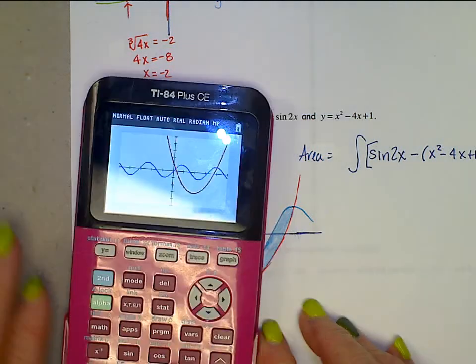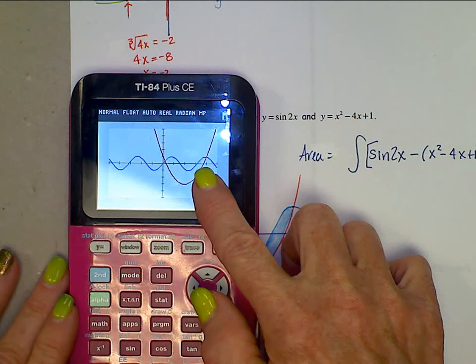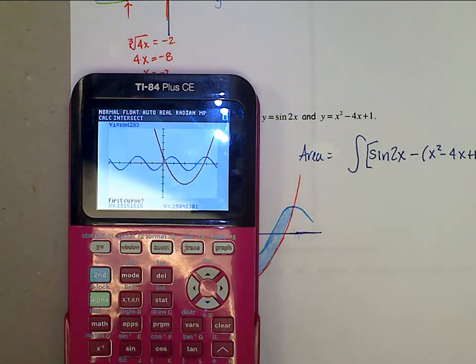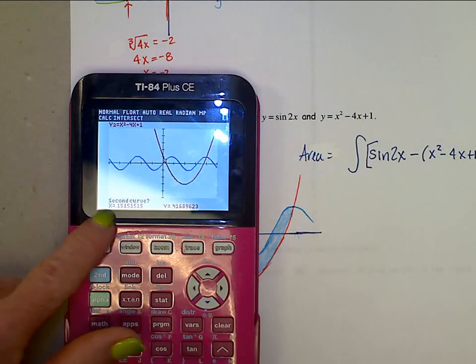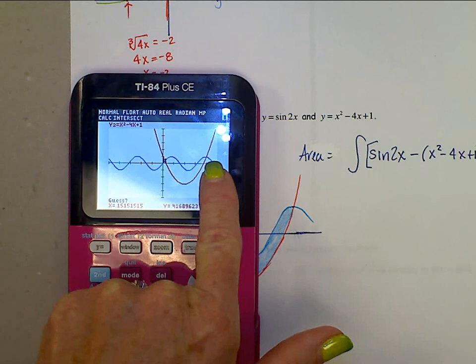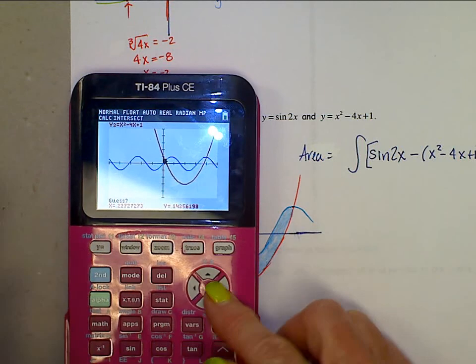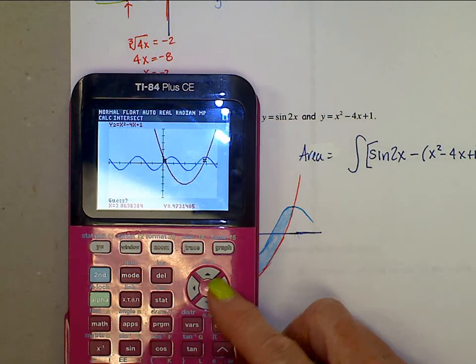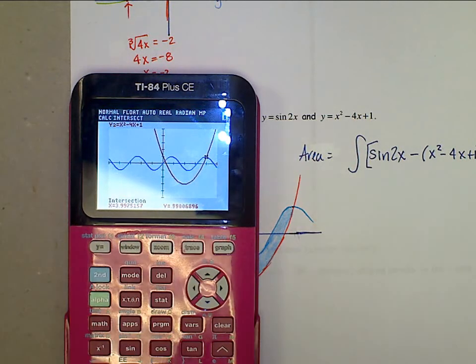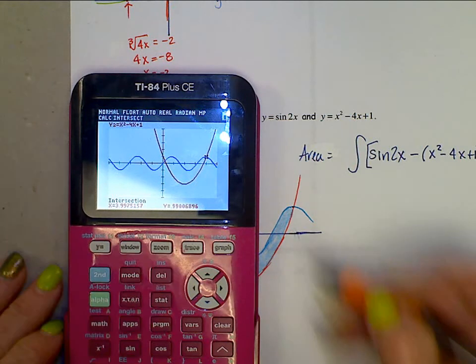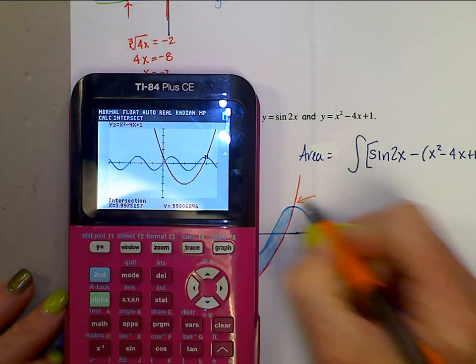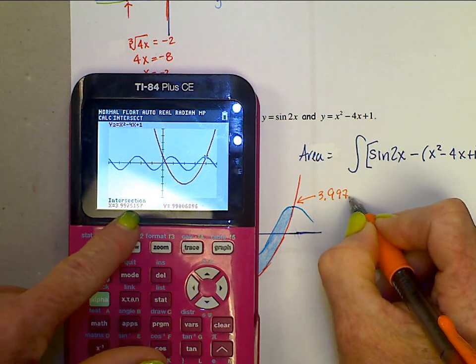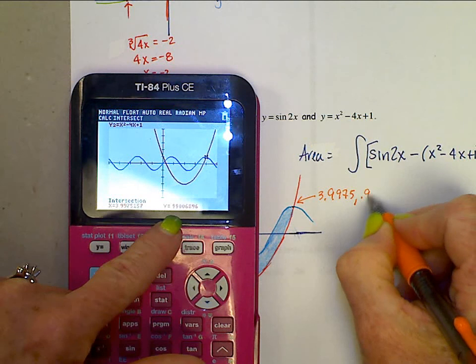Let's go back to your graph. Find the other point of intersection. Second calc, intersect. First curve, yes. Second curve, yes. Guess. You have to arrow over there. Or if you know what number it's close to, I could have just typed a 4. But you do have to get that guess over here close to that second point of intersection. That point of intersection, then, is 3.9975, comma, 0.9900.